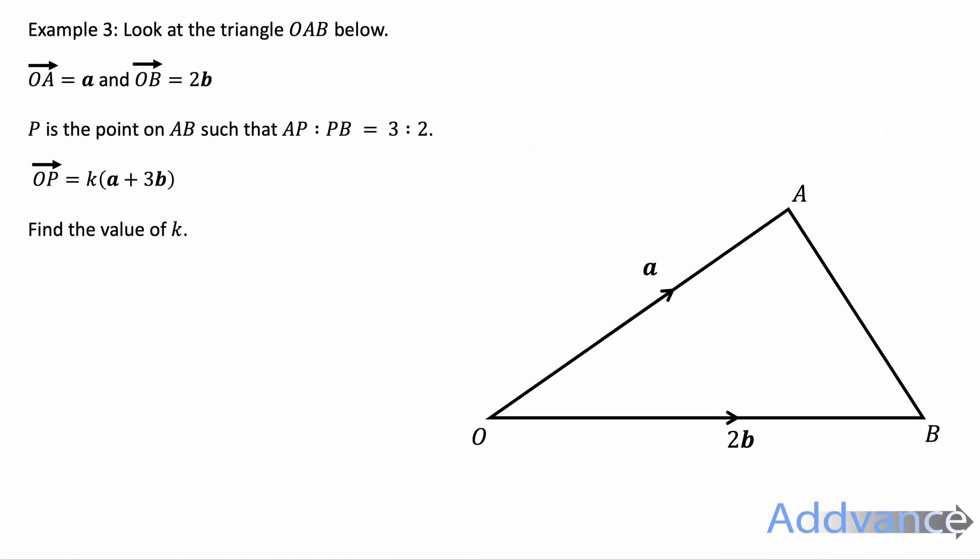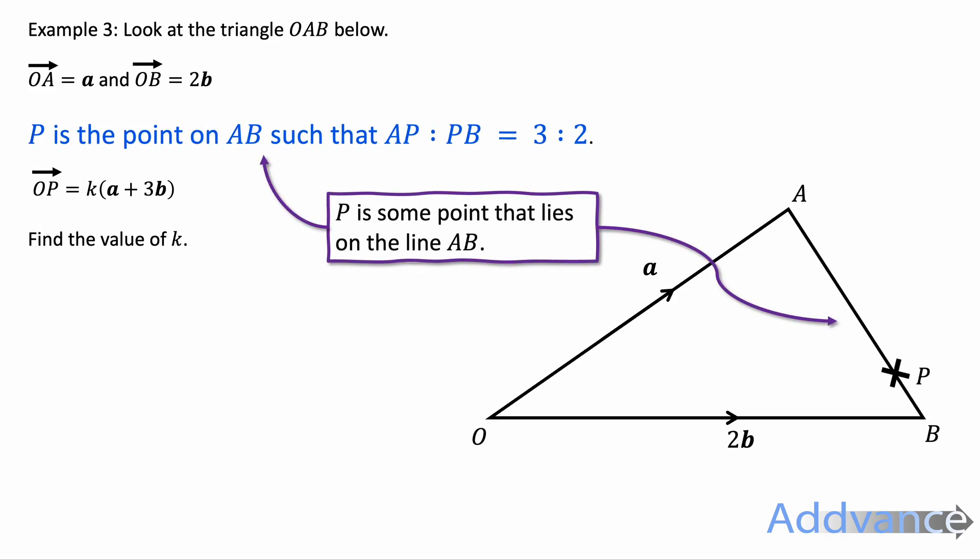Our final question here says look at the triangle OAB below. OA is a and OB is 2b. P is the point on AB such as AP to PB is 3 to 2. OP is k times a plus 3b. Find the value of k. So what we're going to do is find the vector OP, and then we're going to write that in the form something times a plus 3b, and that something will be k.